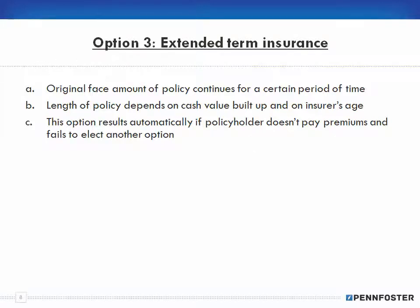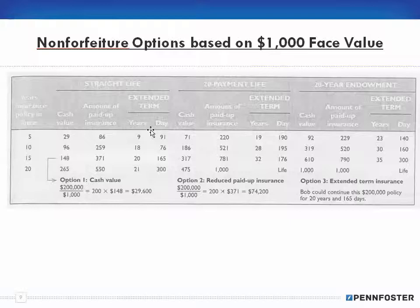Option three is extended term insurance. The original face amount of the policy continues for a certain period of time; the length depends on the cash value built up and the insured's age, just like option two. This option results automatically if the policyholder doesn't pay premiums and fails to elect another option — so if you don't choose option one or option two, this is the default.